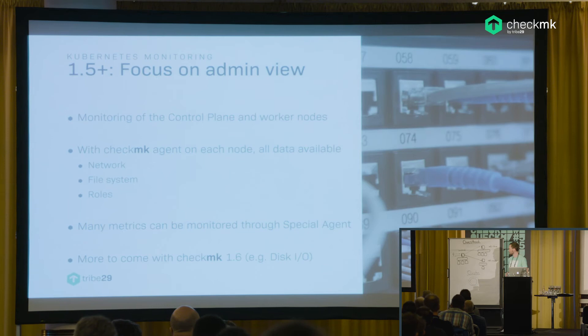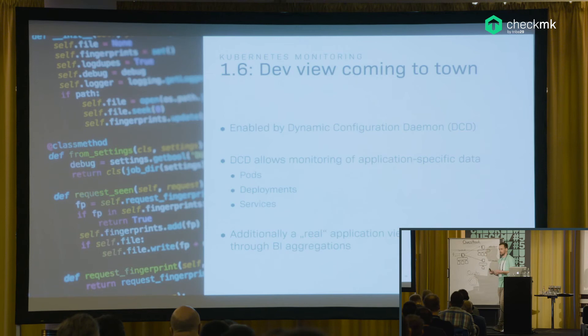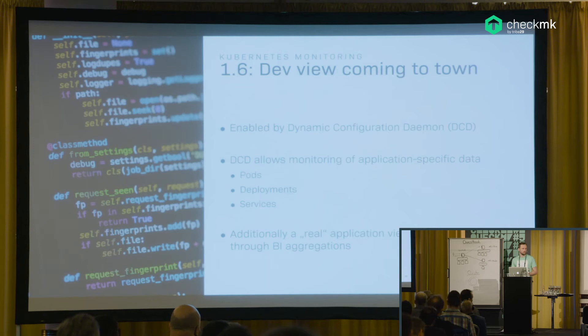So as a summary: in 1.5+ and what's included in 1.6 — this is driven by the configuration daemon, so we can have more dynamic pods, deployments, and services that can be integrated into monitoring automatically. You can also structure it a lot better to get a better overview of different applications. Matthias is going to tell you more about the aggregation and new visualization options available in 1.6.